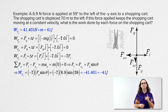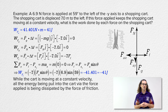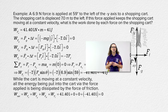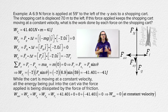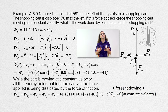Why are the magnitudes of the work done by the force applied and the work done by the force of friction equal — except that the work done by friction is negative? While the cart is moving at a constant velocity, all the energy being put into the cart via the applied force is being dissipated by friction. When we add up all the work done by every force acting on the cart at constant velocity, we get zero. In other words, the net work on an object equals zero when the object is moving at a constant velocity. This is foreshadowing. Thank you very much for learning with me today. I enjoyed learning with you.